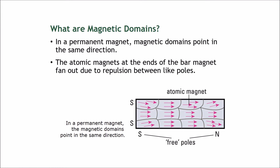However, in a permanent magnet, all the magnetic domains point in the same direction. All of the arrows are pointing to the right. Therefore, at the point where the arrowheads are, this will be considered the north pole. Since they're all pointing in the same direction, the magnetic fields are aligned and their magnetic effects will not cancel each other out — they will act together.